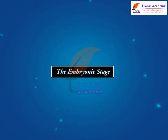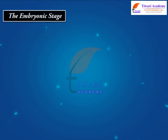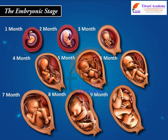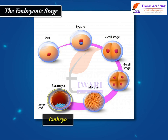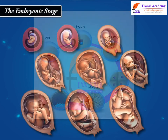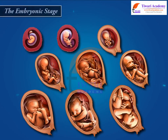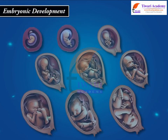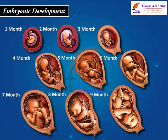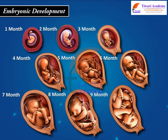The embryonic stage lasts from the end of the germinal stage to two months after conception. The developing ball of cells is now called an embryo, which is an organism in the early stages of development. In human beings, the developing organism from conception until approximately the end of the eighth week, or second month, is called an embryo.